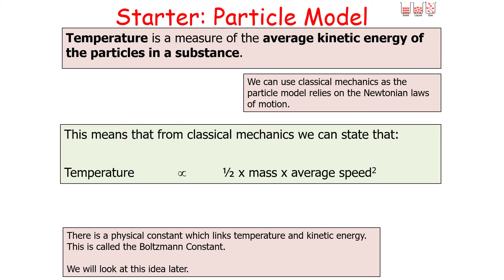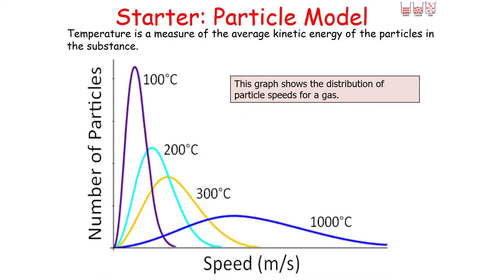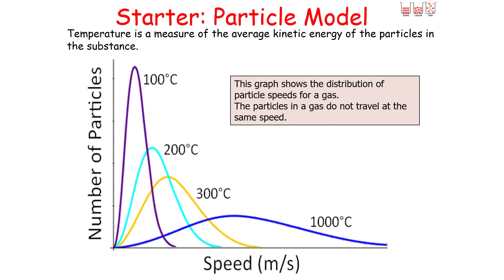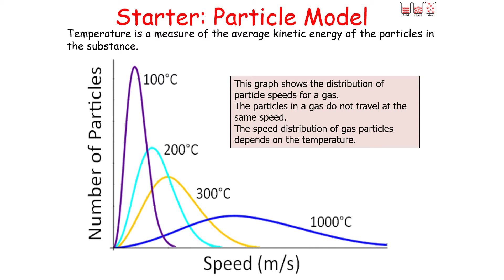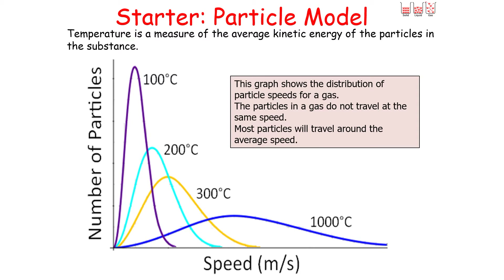There is a physical constant which links the temperature of a substance with the average kinetic energy of the particles, called the Boltzmann constant, which we'll look at later. Going back to the graph, it shows the distribution of particle speeds for a gas. The particles in a gas do not all travel at the same speed — the speed distribution depends on the temperature. Some particles will be moving fast, others much more slowly, but most particles will travel around the average speed.